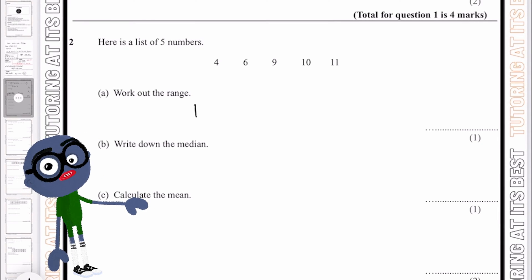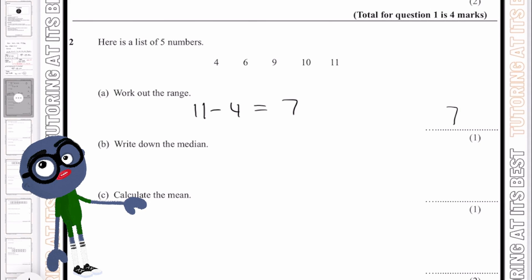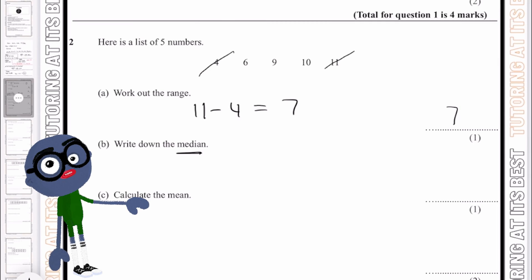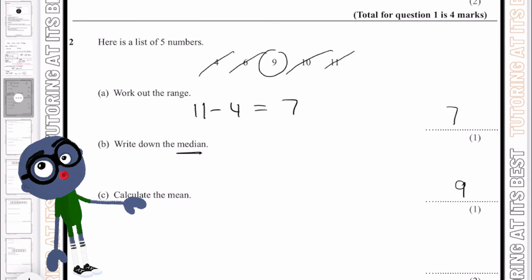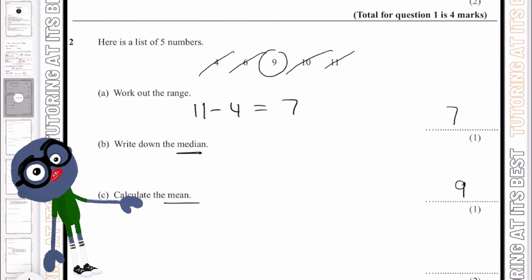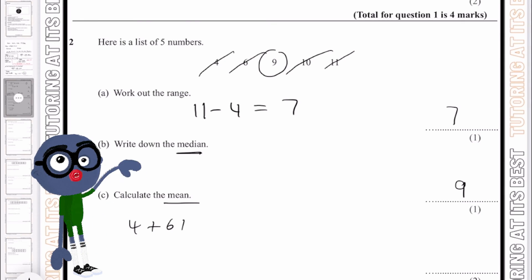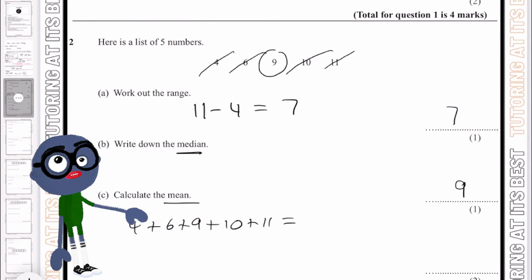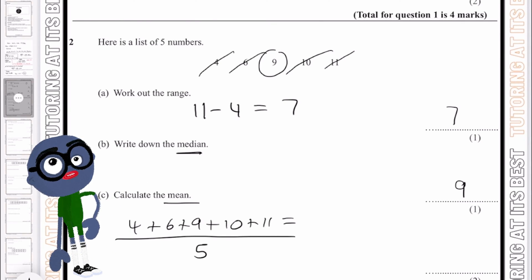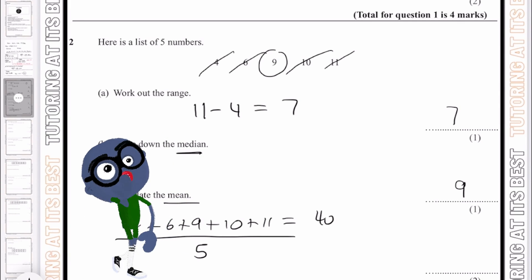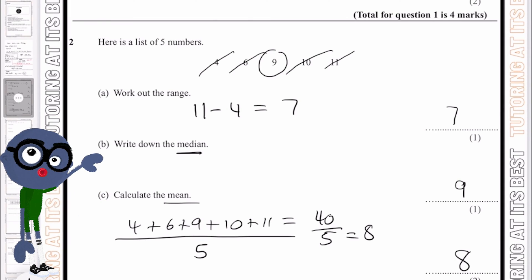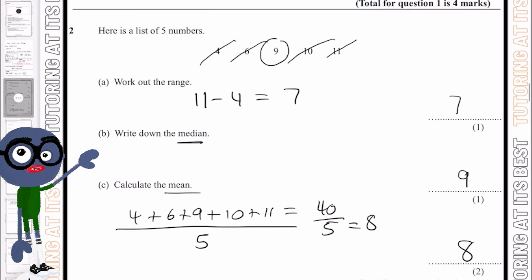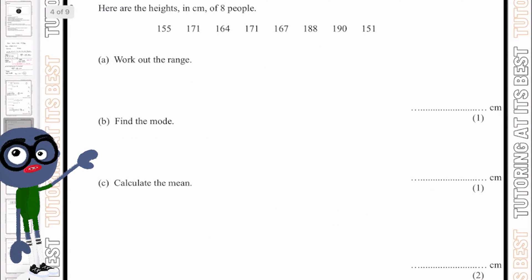Question two: the range is 11 take away 4, which gives us 7. For the median, we cross out 11 and 4, then 10 and 6, and we're left with 9. For the mean, we add all the numbers together and divide by 5, giving us 40 divided by 5, which is 8.